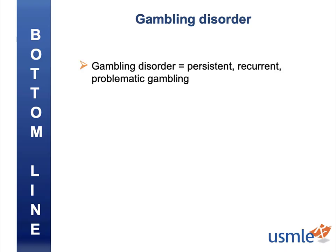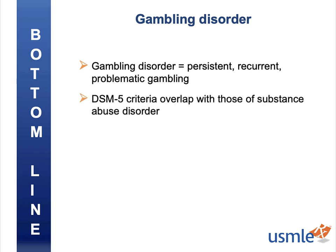Just remember that persistent, recurrent, problematic gambling is the bottom line for this section, but also that the DSM-5 criteria overlap substantially with those of substance abuse disorder, and that the treatment is psychotherapy.